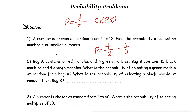So the probability of choosing a random number from one to twelve that is four or smaller is just one-third.